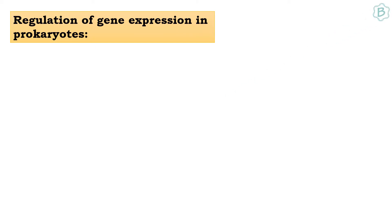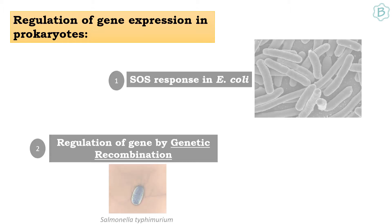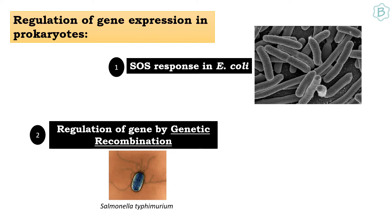Hello everyone. In addition to lac, tryptophan, and ara operon regulation, there are two other mechanisms by which genes are regulated in prokaryotes. We will see an example of SOS response in E. coli and how gene regulation occurs by genetic recombination in Salmonella typhimurium.